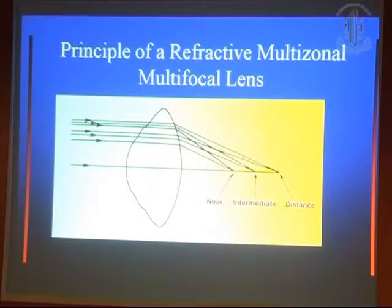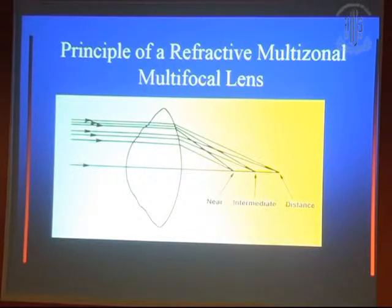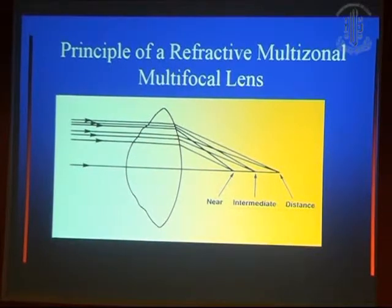So they have 3 focal points: one is focusing on the near, which is where you read; the second is the intermediate, where you use the computer; and the third is for distance, where you see far.